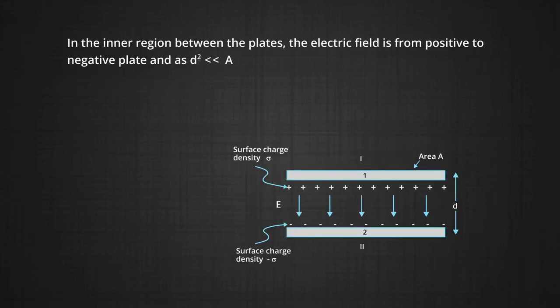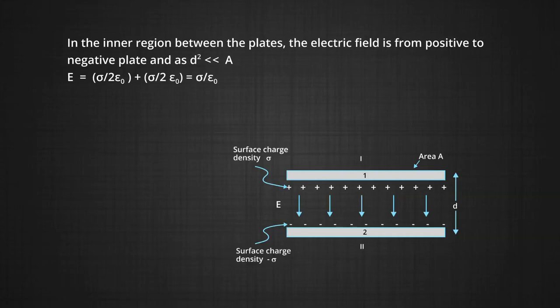But in the inner region between the plates, the electric field is from the positive plate to the negative plate, and it is uniform because it does not depend upon the distance. So, in between the plates, since D² is much less than A, we get E equal to sigma upon 2 epsilon naught plus sigma upon 2 epsilon naught, which comes out to be sigma upon epsilon naught. As you can see in the diagram, the field in between the plates is shown by a set of parallel lines pointing from plate 1 to plate 2.